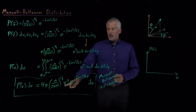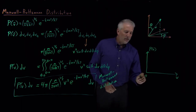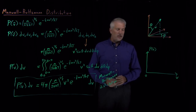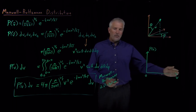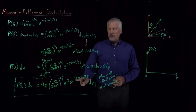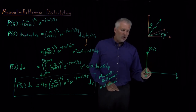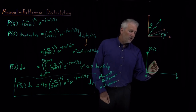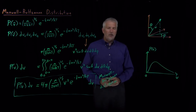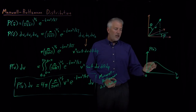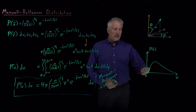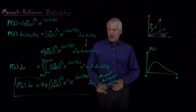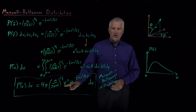Now we're talking about speeds instead of velocities. The lowest speed a molecule can have is zero — we can't have a negative speed since speeds don't have directions. So speeds range from zero up to infinity. If we plot v² times a Gaussian, instead of having a maximum at the origin, the v² factor makes the function have small values near zero, producing a curve with a peak at some intermediate speed.